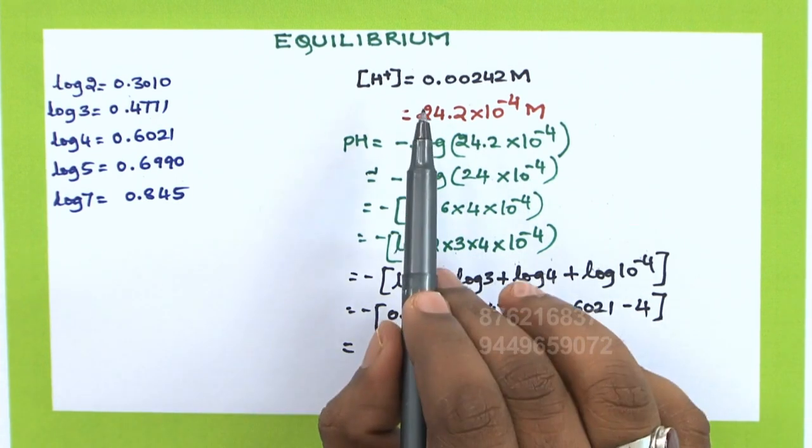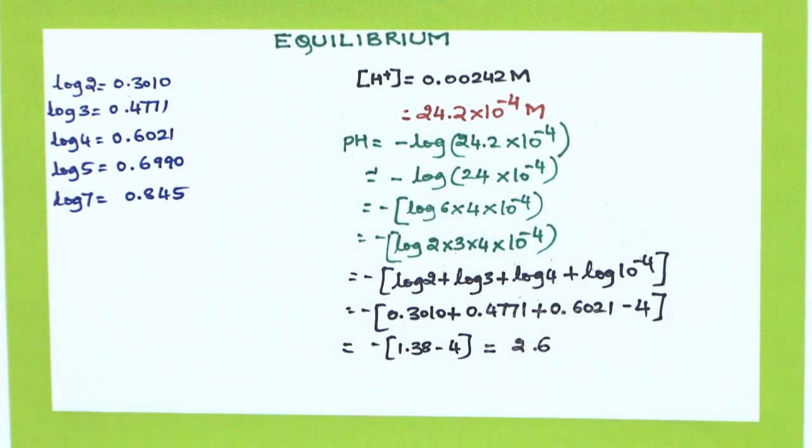Hence, the pH of a solution whose concentration is 0.00242 molar is 2.6.